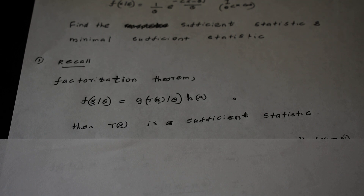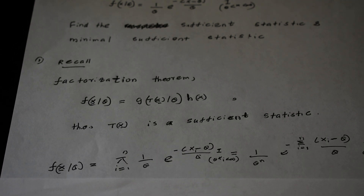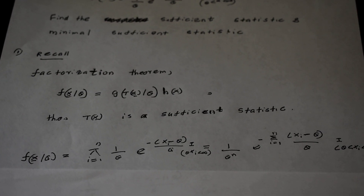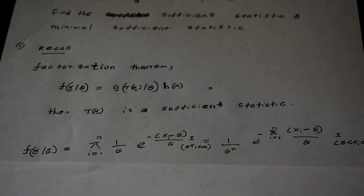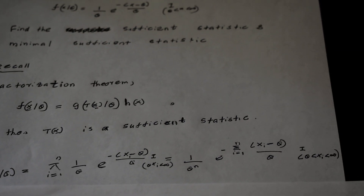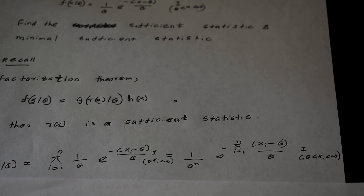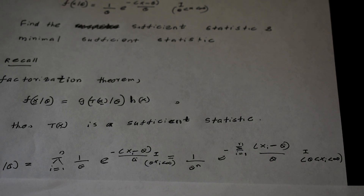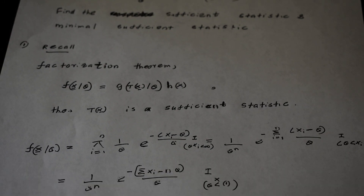We will write our joint density function. Assuming all values of x are independently and identically distributed, the joint distribution is just the product of the individual densities. Simplifying, this equals (1/theta)^n times e to the power of negative [sum of (xi minus theta)] divided by theta, along with the indicator function that all x values are between theta and infinity.